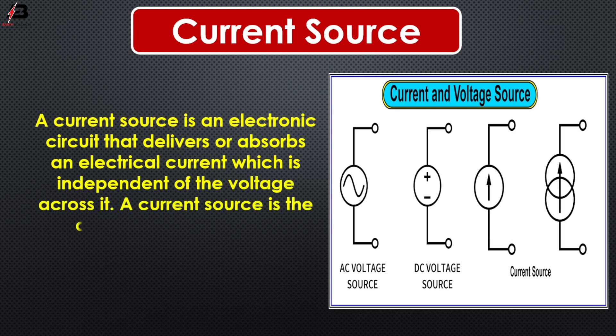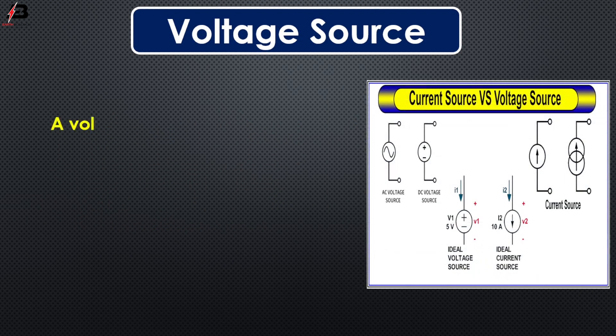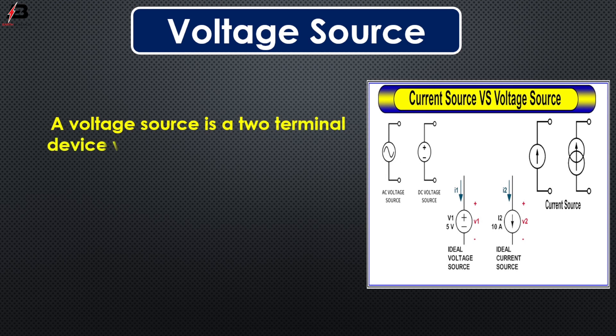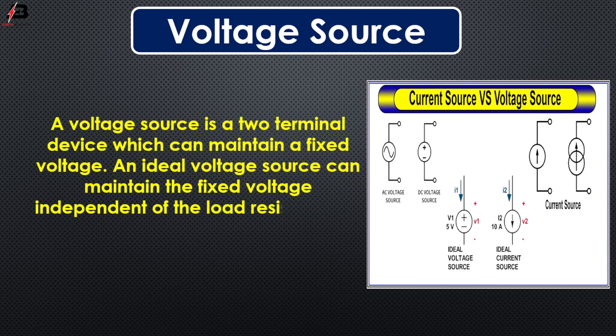A current source is the dual of a voltage source. A voltage source is a two-terminal device which can maintain a fixed voltage. An ideal voltage source can maintain the fixed voltage independent of the load resistance or the output current.